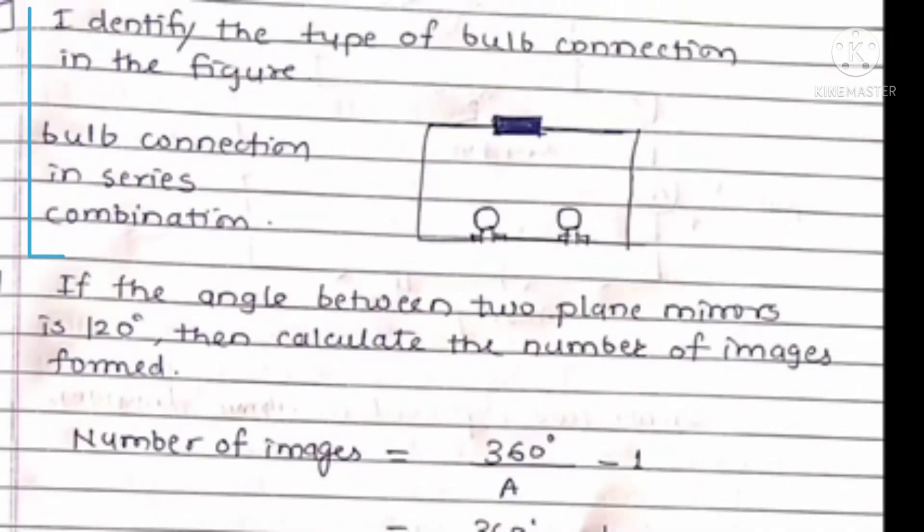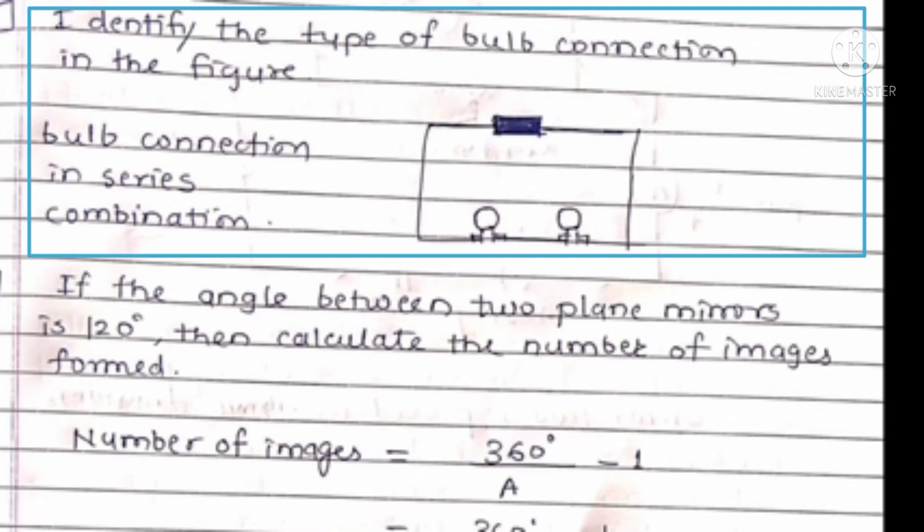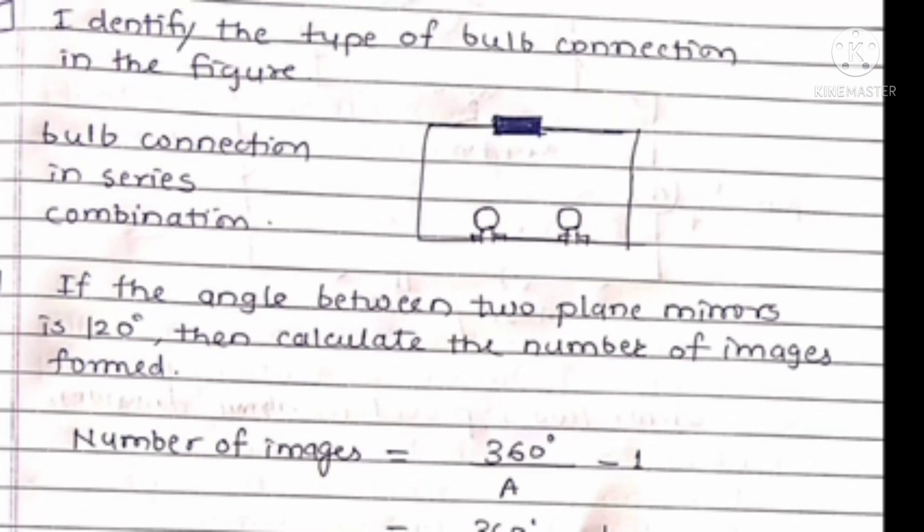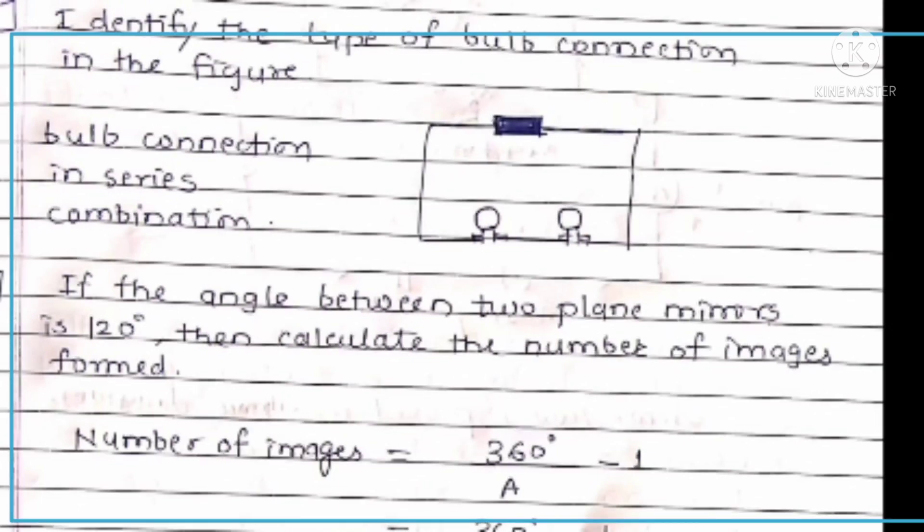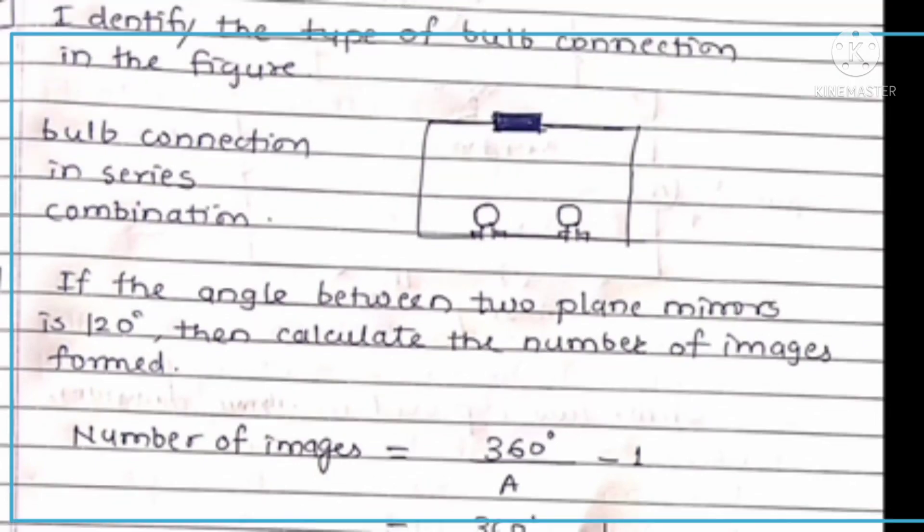Next question: Identify the type of bulb connection in the figure. The given figure shows bulb connection in series combination. Question number seven: If the angle between two plane mirrors is 120 degrees, then calculate the number of images formed.